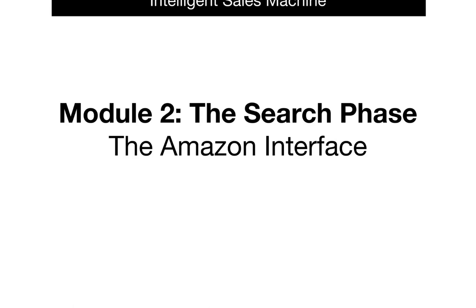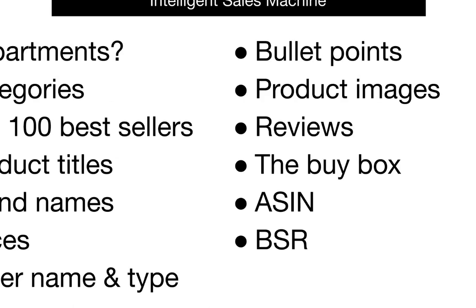First, we're going to show you how to find and search Amazon departments. Within departments, you're going to be locating and diving deep into Amazon product categories. These categories will be something you'll become extremely familiar with. Within product categories, you're going to be using the top 100 best sellers in each category. This is always where we begin our process before diving deeper into subcategories and sub-subcategories.